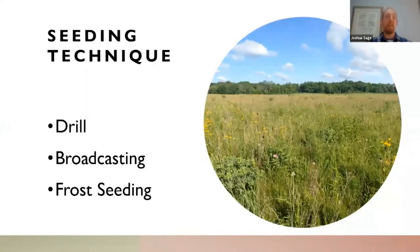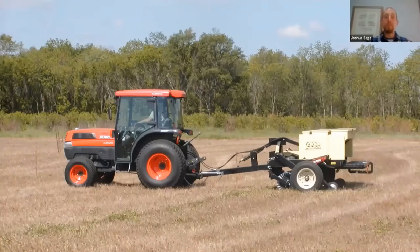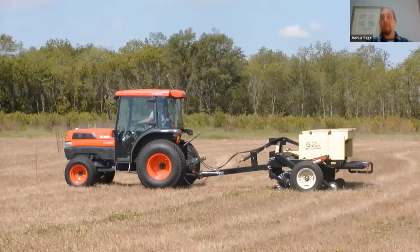Seeding technique. I'm going to talk briefly about drilling — conventional agricultural equipment — broadcasting, and then with broadcasting, talking heavily about frost seeding. This is conventional ag equipment: a 50-horsepower tractor with a three-point hitch power takeoff pulling a no-till seed drill, probably eight feet working width. It's designed for native seed with three bins — the rear for a cover crop like oats, the middle for fluffy native seeds mainly grasses and some large forb seeds, and the front for small forb seeds. A coulter on the front loosens the soil, seed falls between V-shaped discs getting set into the ground in slits, and packing wheels in the rear push the seed into the soil for seed-to-soil contact.